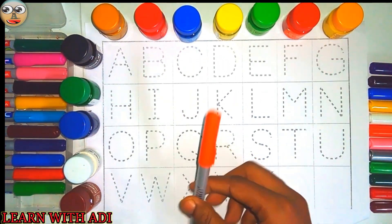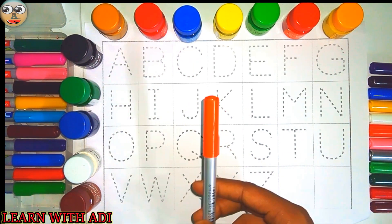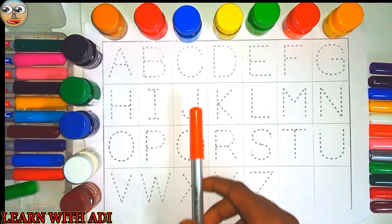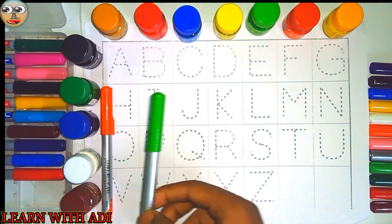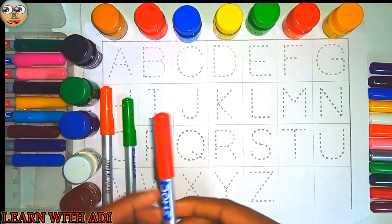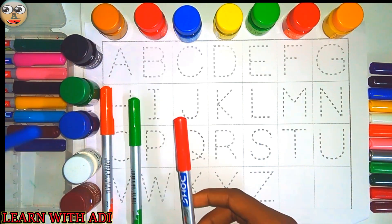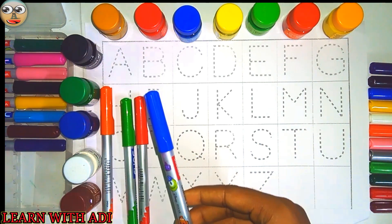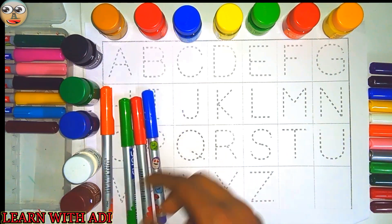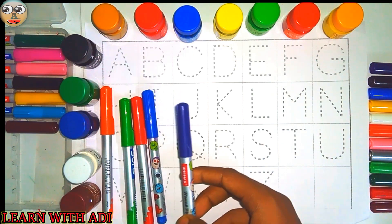Let's know the color's name. This is orange color, this is green color, this is red color, this is blue color, this is purple color.